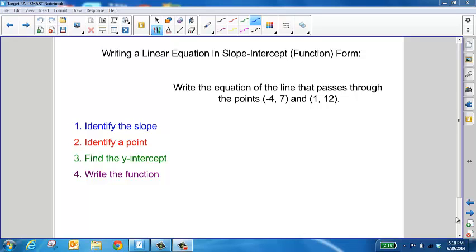To write a linear equation in slope-intercept or function form, there are a couple of things you need to do. First, if you're given two points and you want to write the equation of the line that passes through those points, the first thing you need to do is identify the slope.